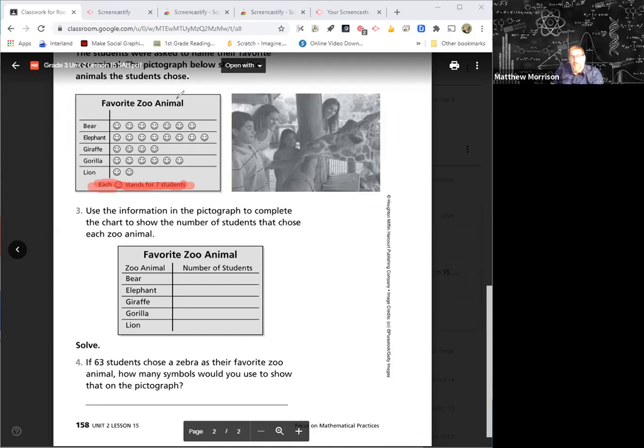Remember, the key right here helps tell us how many each of those smiley faces stand for. Each smiley face stands for seven. It's not seven students in all—it's seven times seven. So seven times seven is 49. How many elephants are there? Eight, right. So seven times eight is 56.